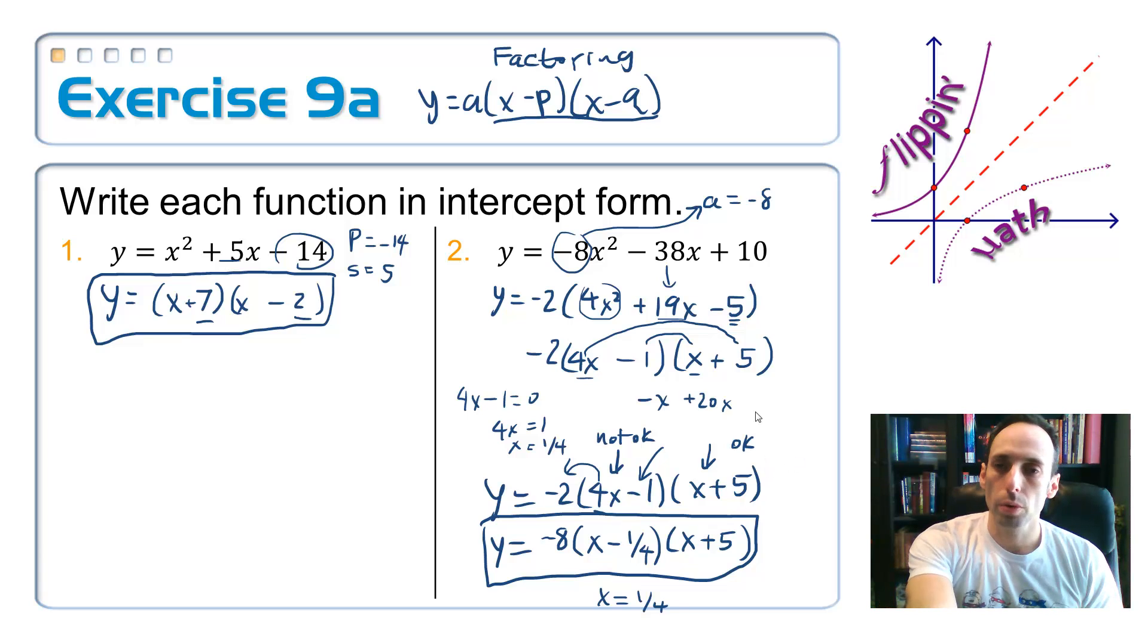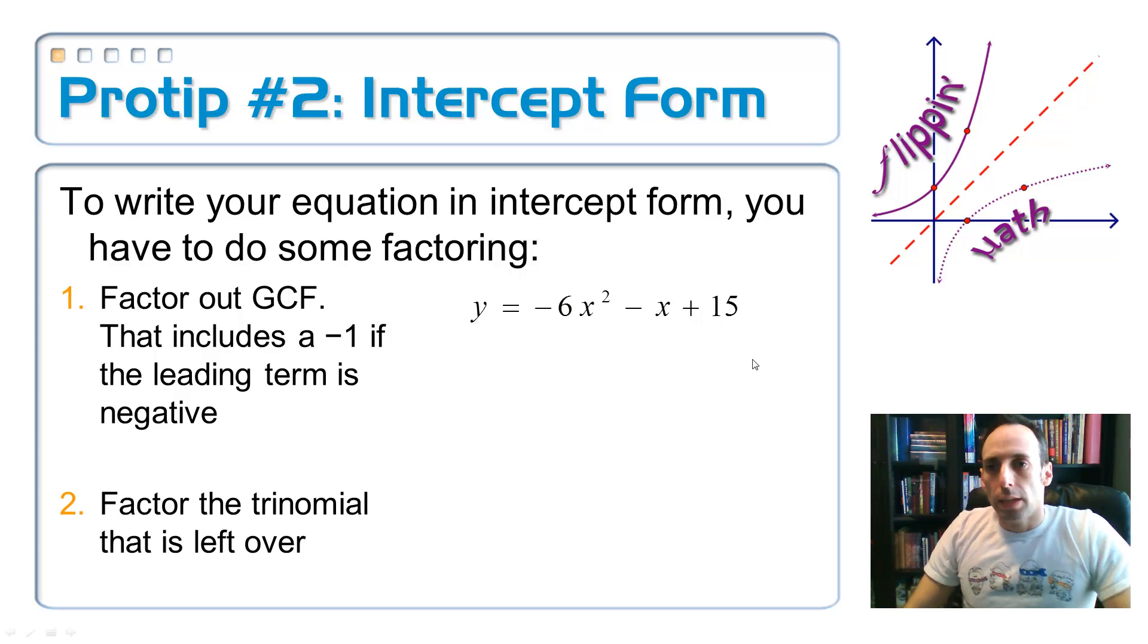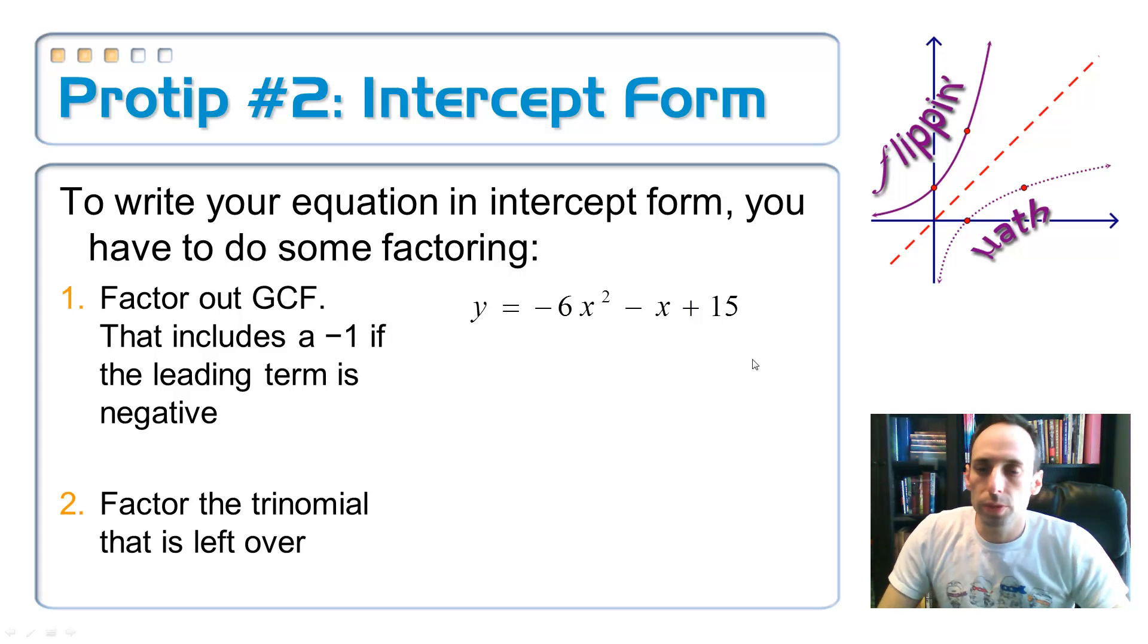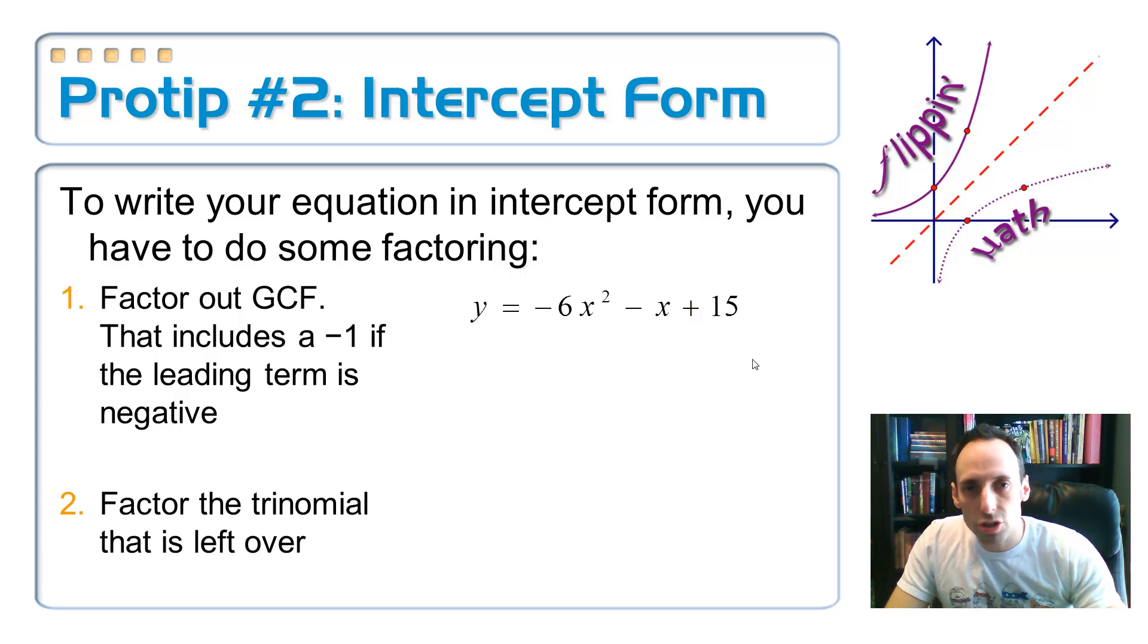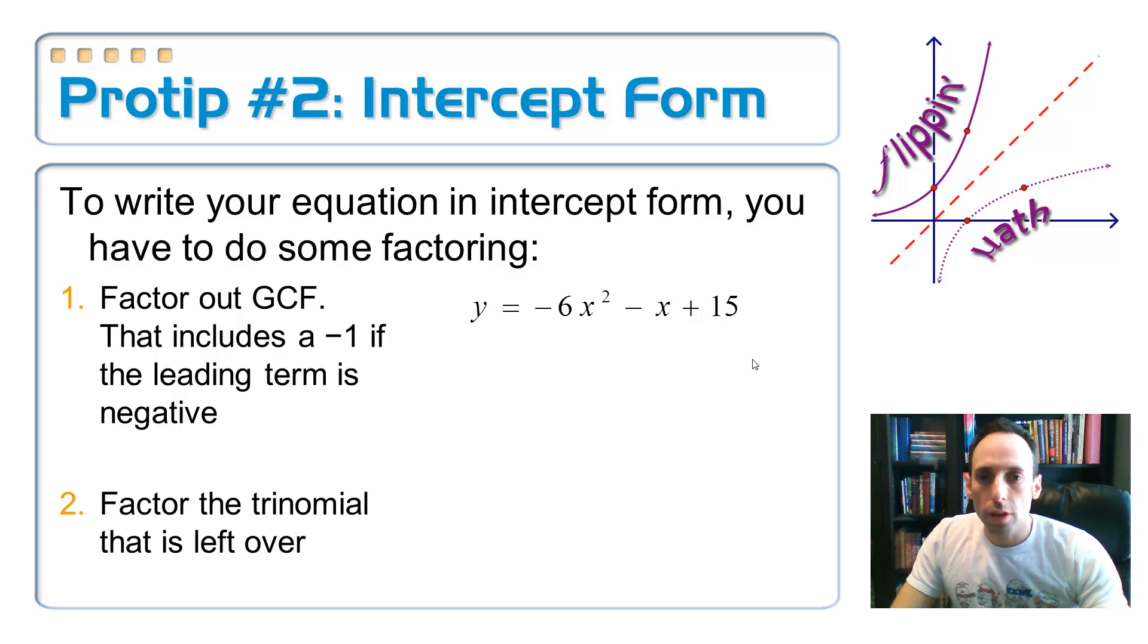So, let me give you a little pro tip on this one, then. Pro tip number 2 on intercept form. So, if it's going to be in intercept form, you're going to have to do some factoring. But, step number 1, always take out a GCF, especially if it's a negative number. If the leading coefficient is negative, I've got to pull it out. So, if I look at this equation right here, y equals negative 6x squared minus x plus 15, I don't have anything in common at all, so I'm just going to go ahead and just take out the negative.